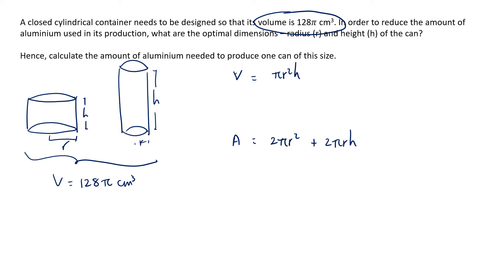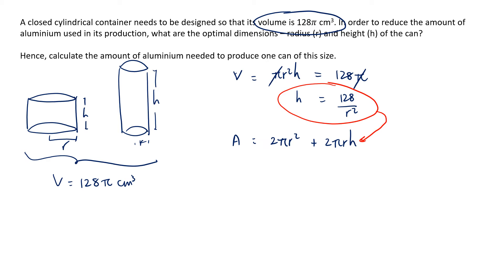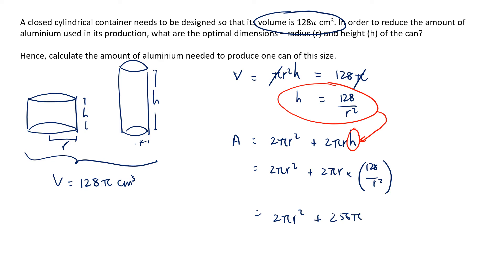Notice also that A is a function of both r and h. What we now want to do is convert the expression for the surface area to be in terms of one variable — either r or h. Using the constraint that the volume equals 128π, we cancel out π and express h in terms of r as h = 128/r². We then substitute this into the surface area expression, giving A = 2πr² + 2πr × (128/r²), which simplifies to A = 2πr² + 256π/r.